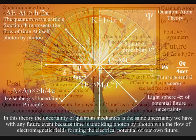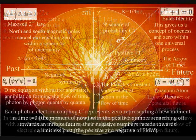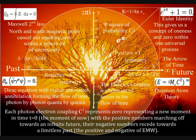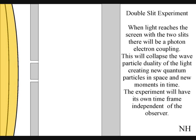Everything we do is done over a period of time. Every observation, every scientific experiment that has ever been carried out has been done over a period of time, but we have no understanding of what the moment of now is. This has to be the most important moment in any observation or scientific experiment. The two-slit experiment is very simple, but we have no rational or objective understanding of why the light acts the way it does. But if we look at the two-slit experiment as a process over a period of time — with time being formed photon by photon within the reference frame of the experiment — it can make sense.